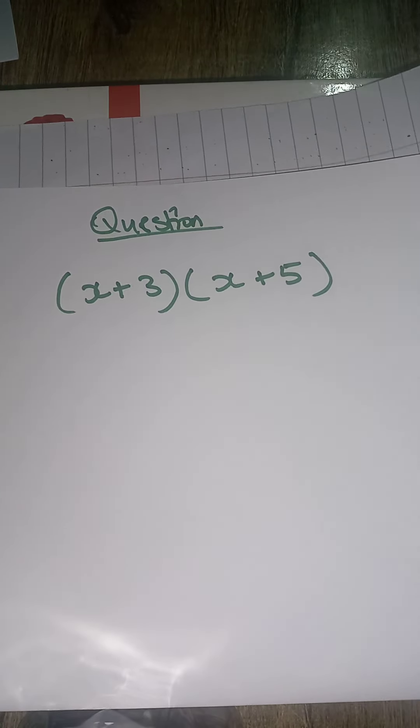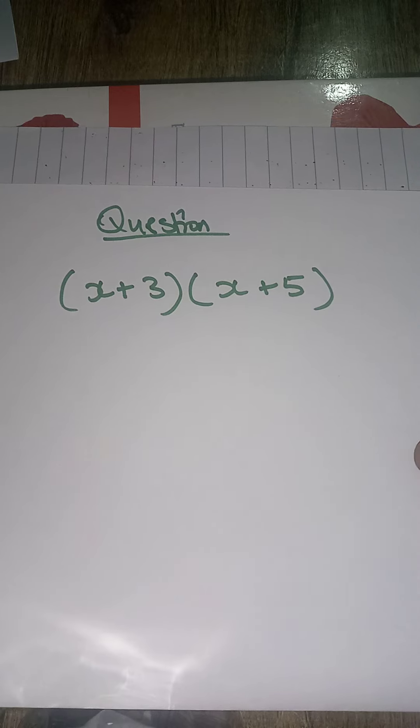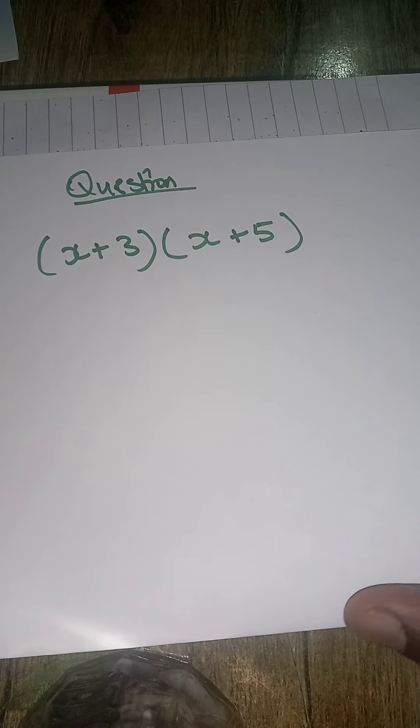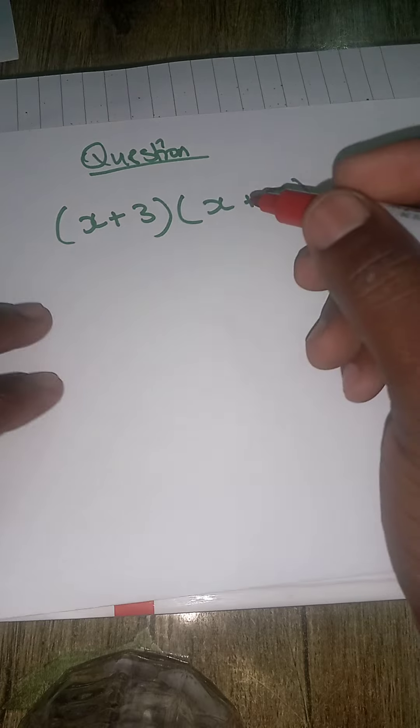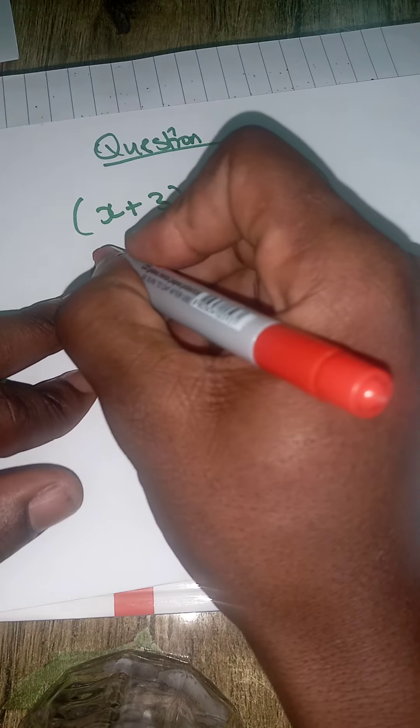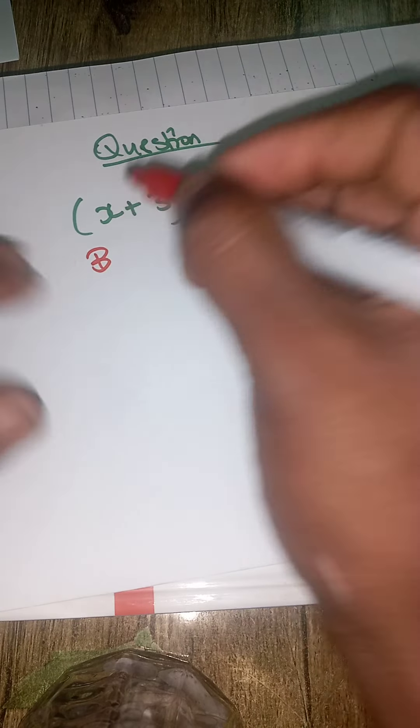Alright, now we're gonna step up the game a little bit — make it a little bit harder. Notice this time it's not one term on the outside multiplying all that is inside the bracket, but it's basically two brackets multiplying two brackets. So this is what I'm going to teach — it is called the bird beak method.